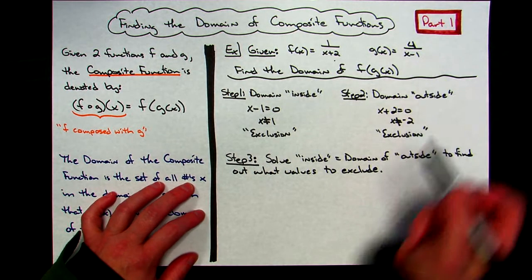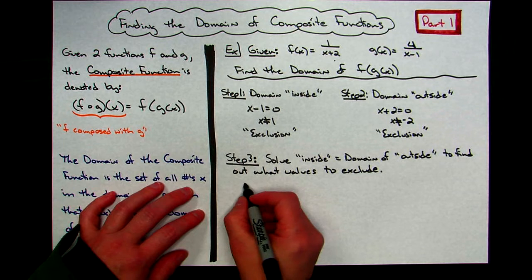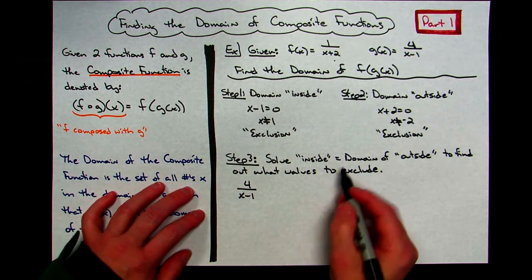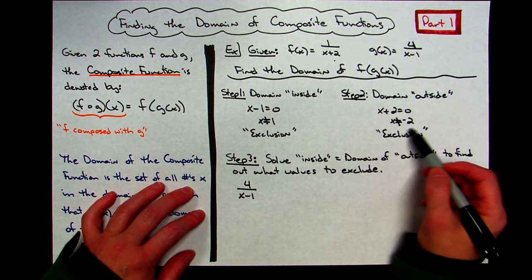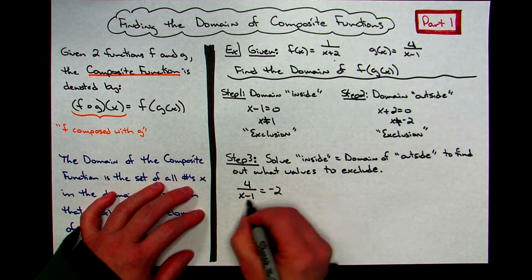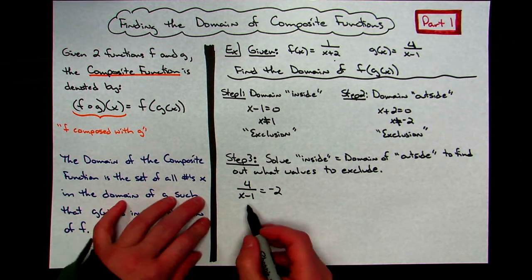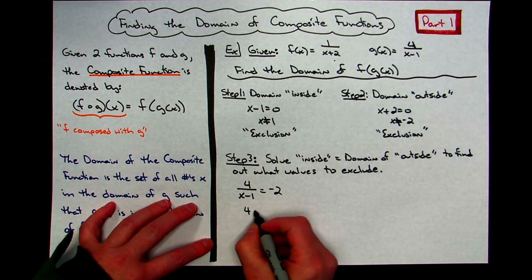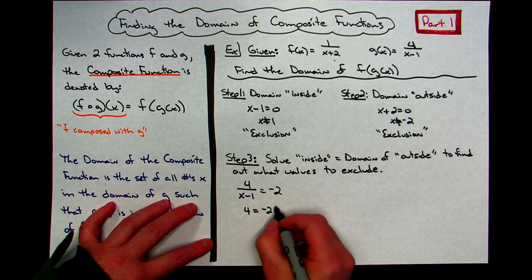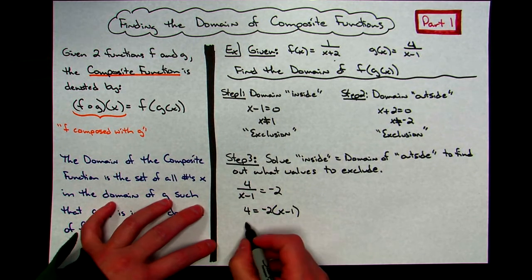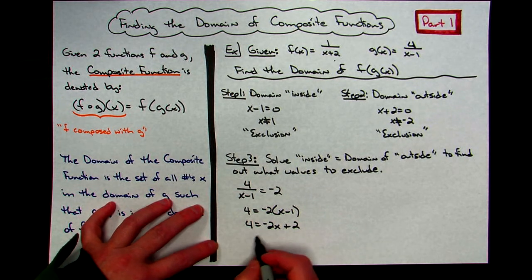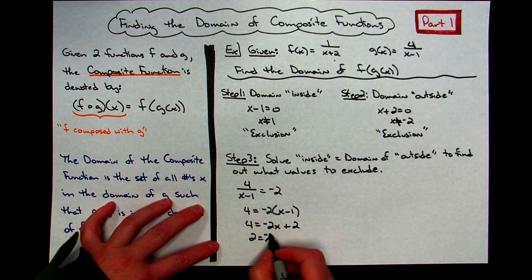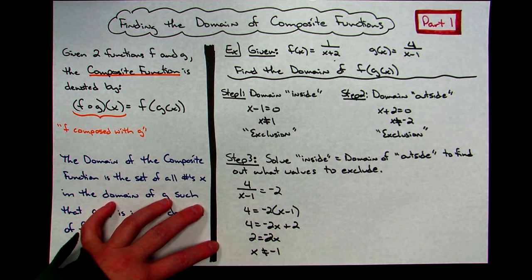My inside function is 4 over x minus 1. I set that equal to negative 2 — because negative 2 was excluded from the outside function's domain — and solve that equation. Multiply both sides by x minus 1: 4 equals negative 2 times (x minus 1). That gives 4 equals negative 2x plus 2. Subtract 2 from both sides: 2 equals negative 2x, so x equals negative 1. Therefore x cannot equal negative 1.